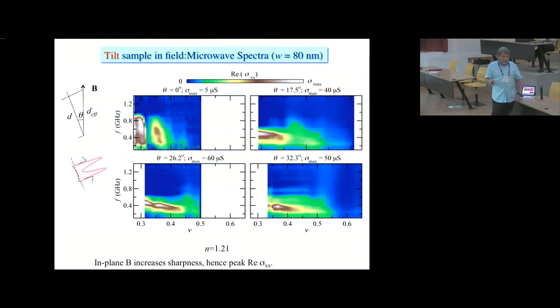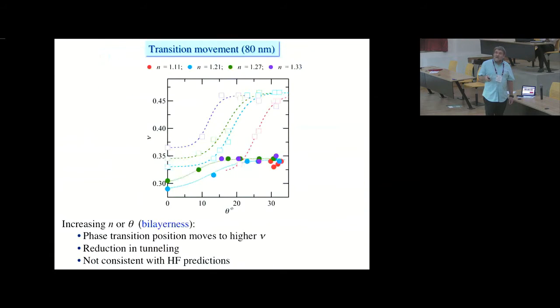Finally, I'll talk about tilting the sample in the field, where we simply put it on a rotator. If we do that, tilting it makes the resonance sharper and larger. We still see phase transitions and they move as things are being tilted. Two more slides.